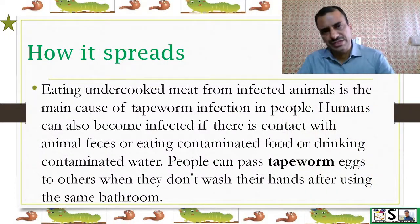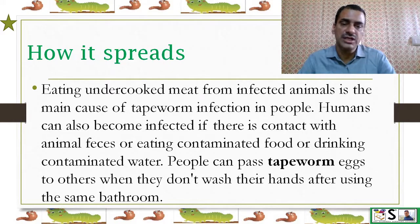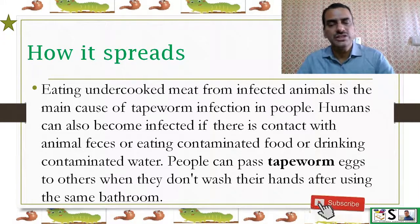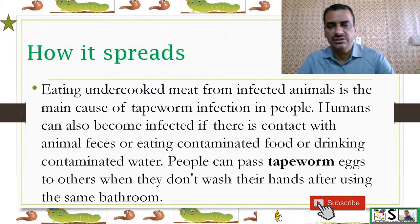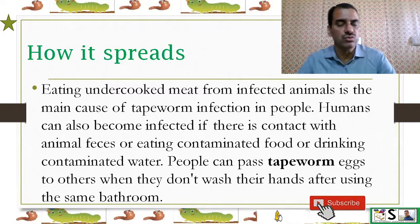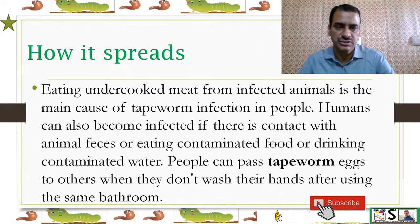How does it spread? Eating undercooked meat from infected animals is the main cause of tapeworm infection. Humans can also become infected through contact with animal feces, or by eating contaminated food or drinking contaminated water. People can pass tapeworm eggs to others when they don't wash their hands after using the toilet.